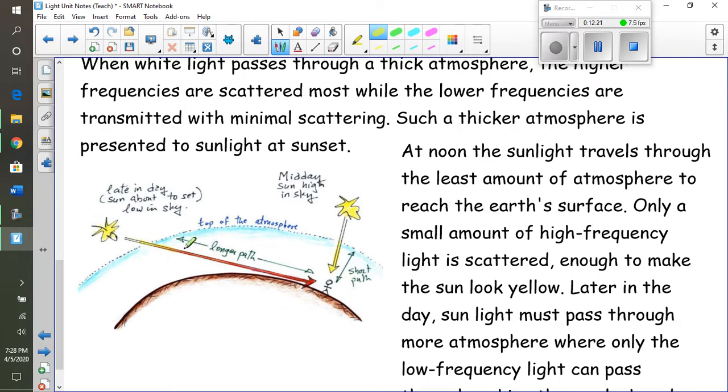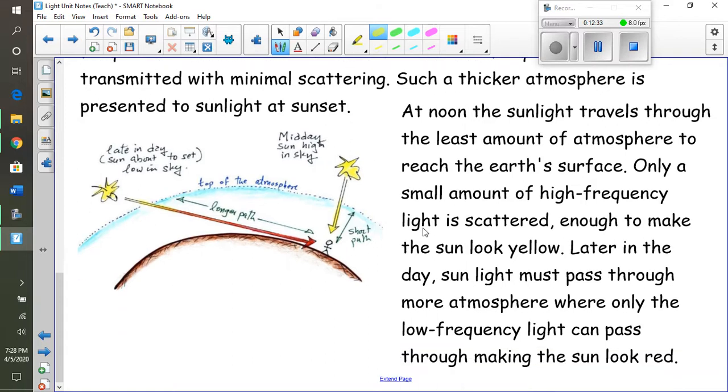The sunlight has to go through a thicker part of the atmosphere, but at high noon the sunlight goes through less atmosphere. So it doesn't look red at that time, it looks more yellow. Late in the day, sunlight must pass through more atmosphere - only the low frequencies can get through, making it look red. And I believe that was the last part of our notes here.